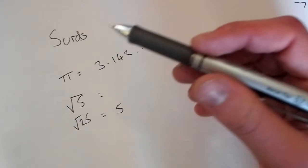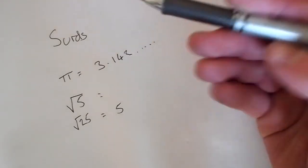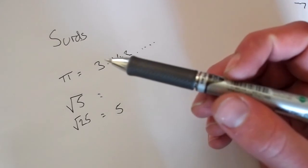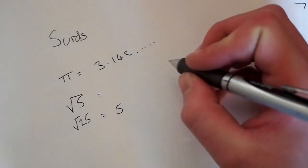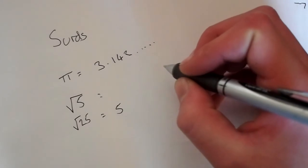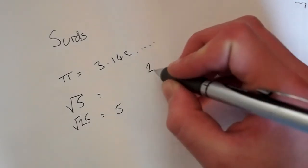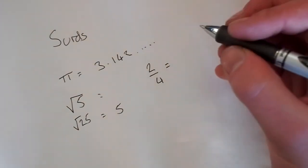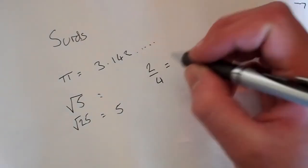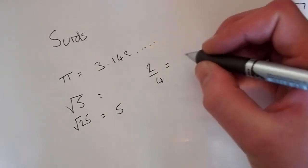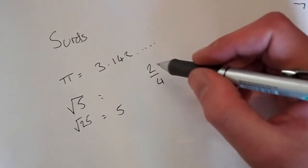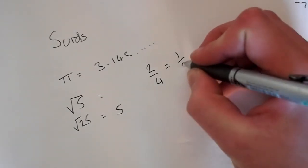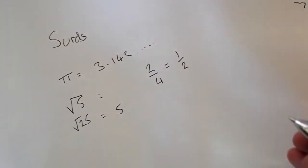So when we have surds, quite often they'll ask you to simplify the surd to its simplest form. I mean it's quite similar to when you're asked to simplify a fraction. Say you had two quarters, it's a very simple example, but you'd be asked to simplify a fraction. So it's like two quarters isn't in its simplest form, it can be written as a half. And that's the same with a surd.